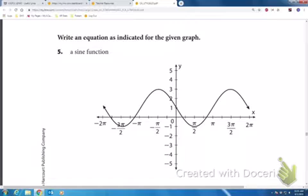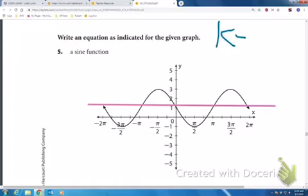So notice that the graph has been shifted, so I can right away get my midline is here at k, at 1. So k would equal 1.